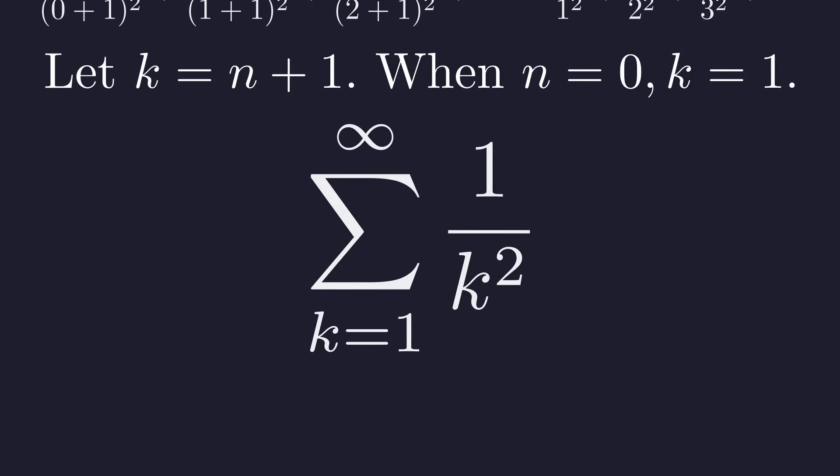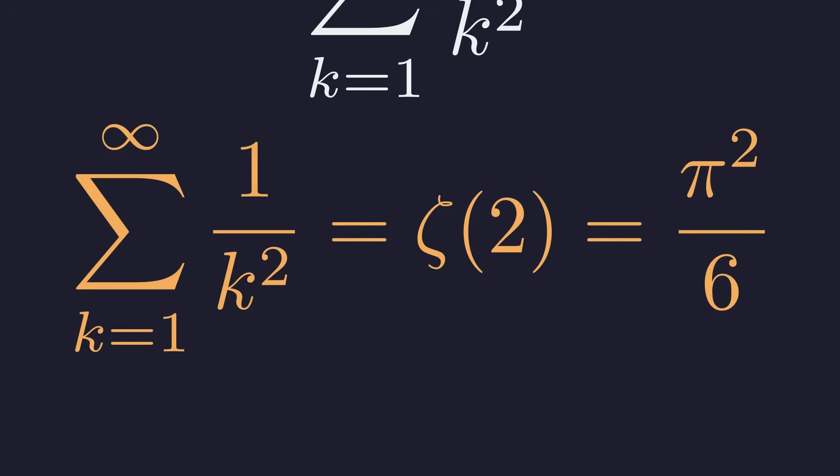This is the Basel problem, famously solved by Euler in 1734. The sum equals the Riemann zeta function at 2, which has this beautiful closed form: pi squared over 6.